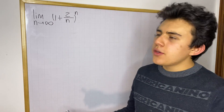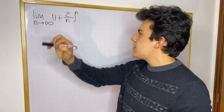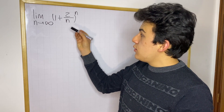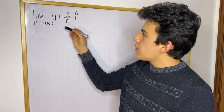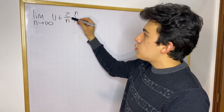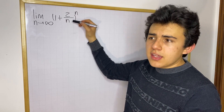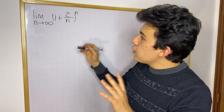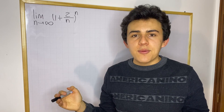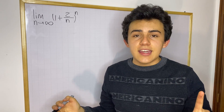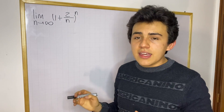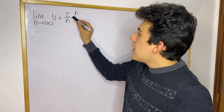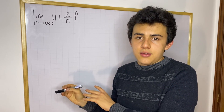Today I want to show you how you can compute this limit. This limit, although it kind of looks like Euler's number — you know that if you have 1 over n instead of 2 over n, that is going to be Euler's number — but although you might think this equals Euler's number, that's not the case. This 2 changes many things, and I'm going to show you how that happens.